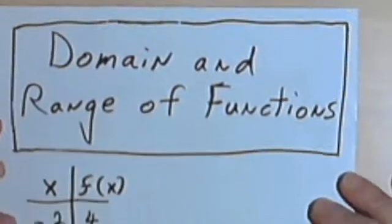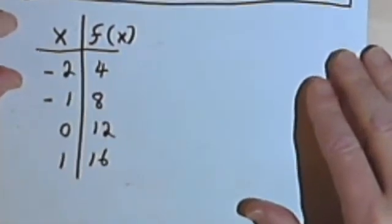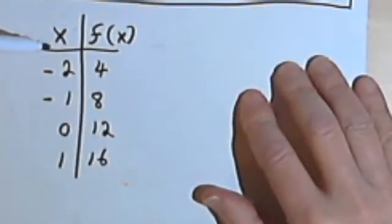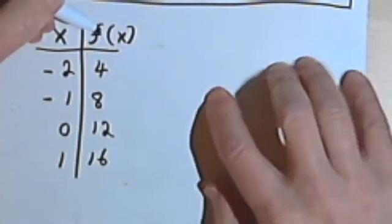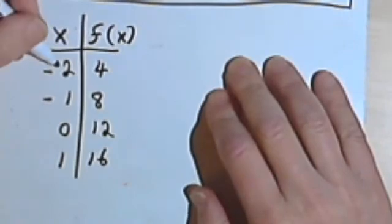Let's look at a table first. I've created this table of values with two columns. The left column where the input goes is labeled x, and the output column I've labeled f(x) since it's a function. I could have labeled it y, but I've used f(x).